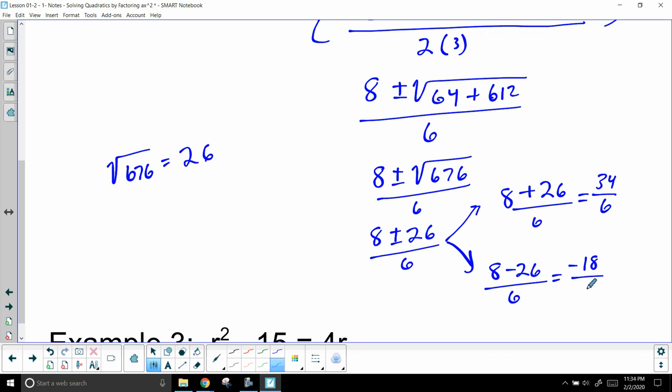This turns into negative 3. This one just simply reduces, I believe to... that's what I thought, 17, so 17 over 3. So our two answers is going to be negative 3 and 17 over 3.